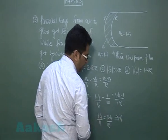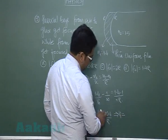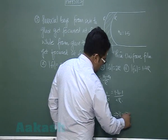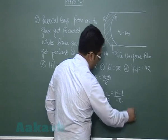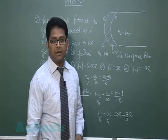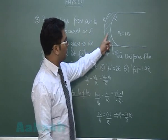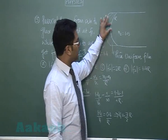And it implies v1 is equal to 14 by 4, that means 7 by 2 r. But v1 is the intermediate image, you may call the image formed when rays travel from air to film.